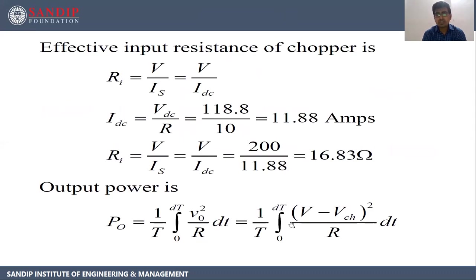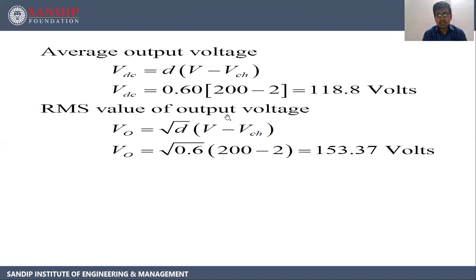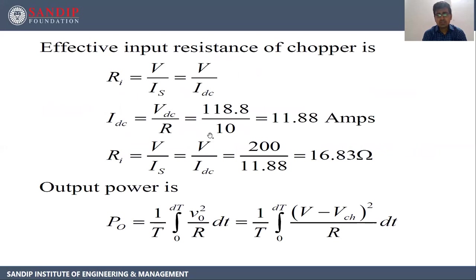The effective input resistance of the chopper is RI equals V upon IS, or V upon IDC. IDC equals VDC upon R, so IDC equals 118.8 upon 10, giving IDC as 11.88 amperes. Then RI equals V upon IDC, so RI equals 200 upon 11.88, giving RI as 16.83 ohm.